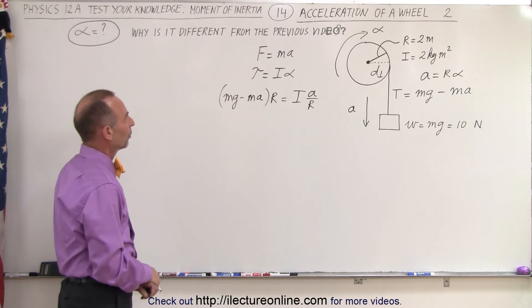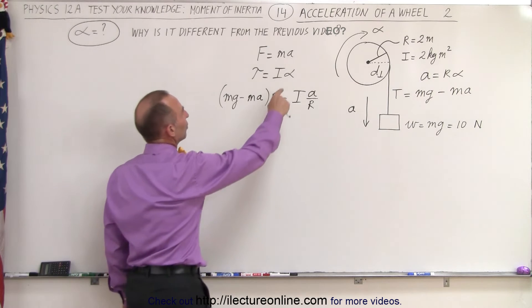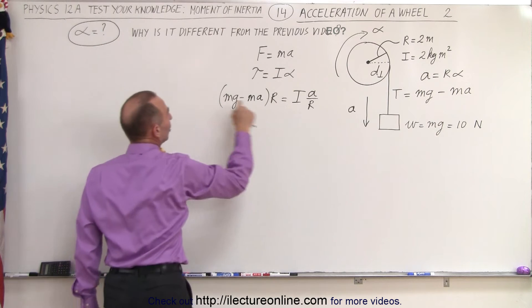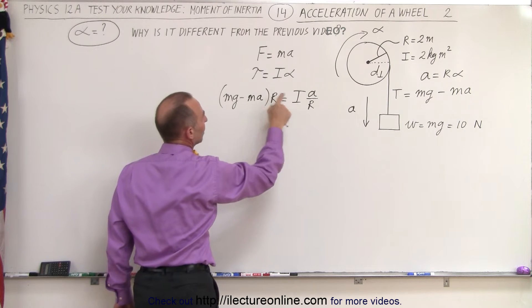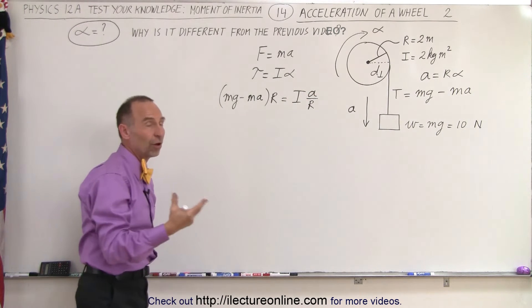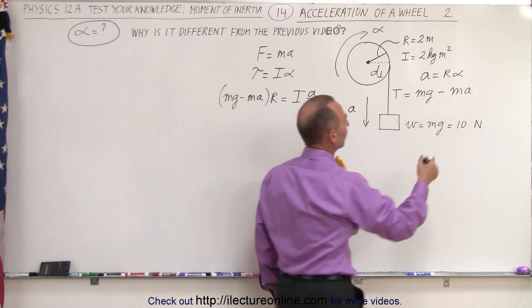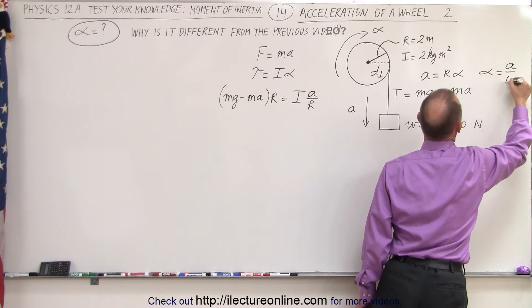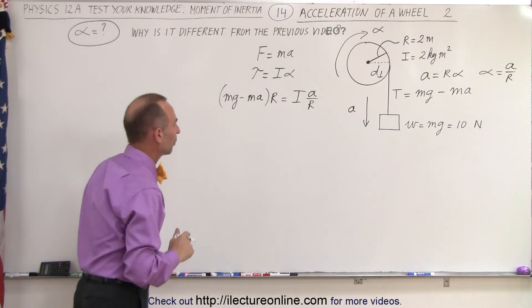All right, so what are we trying to find? We're trying to find the angular acceleration. So why did I change this to A? Well, because I have other A's in there—I have an MA here and I have an A there—so first I'm going to solve for A, and then later on I'm going to solve for alpha, because I know that alpha is going to be equal to A over R. So let's first find A and then we'll find the angular acceleration.